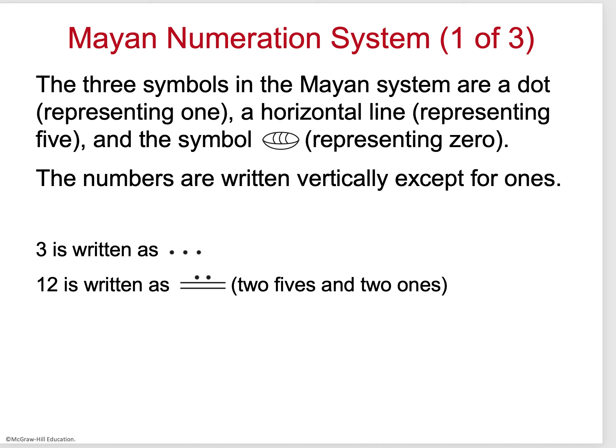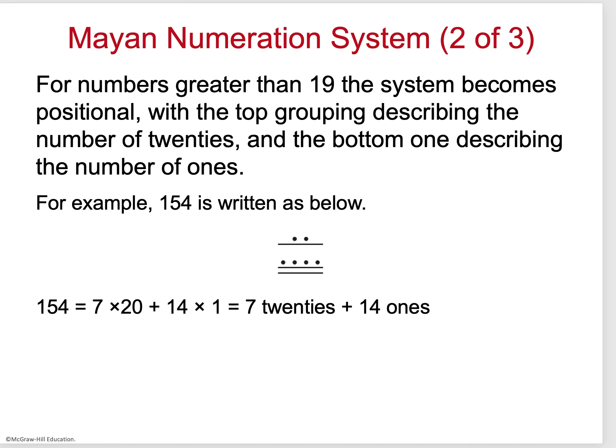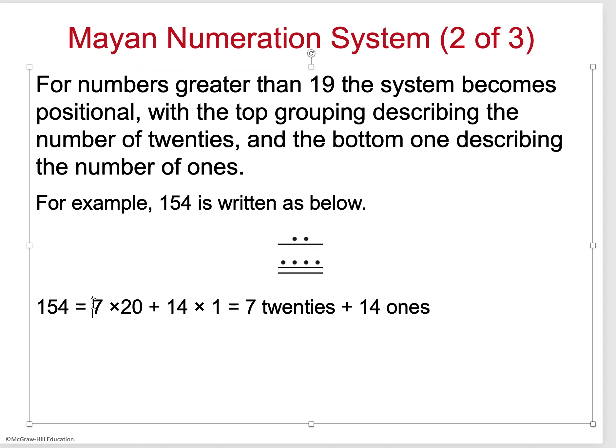The Mayan number system uses dots — each dot represents an item, so 3 is written as 3 dots. 12 is written as 2 fives and 2 ones. This system uses powers of 5 rather than powers of 10. Looking at an example with a space separating groups, I identify 4 and 2 fives in the dot system, plus 2 dots above the line, and get 154 — because there are 7 twenties and 14 ones: 7 × 20 + 14 = 154.